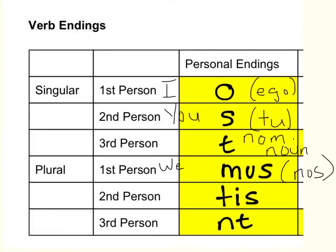Tis is the y'all ending — the more than one person, second person plural. So that's what we call y'all in English: you all. And the pronoun for y'all in Latin is vos.